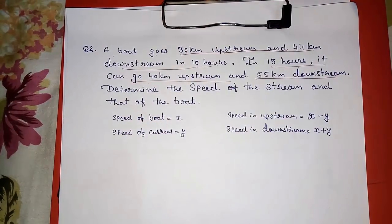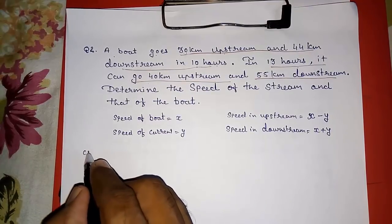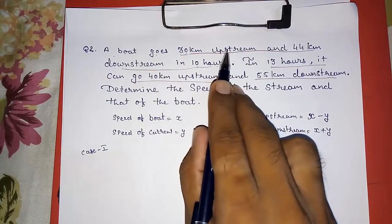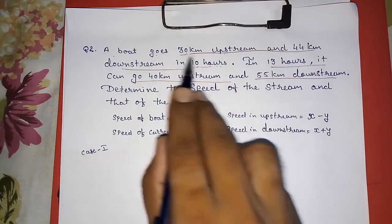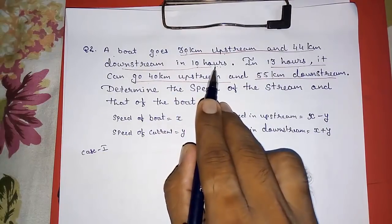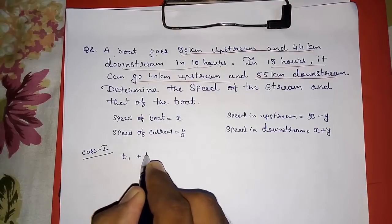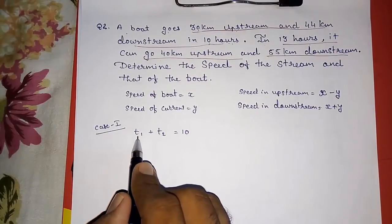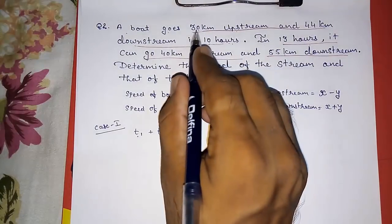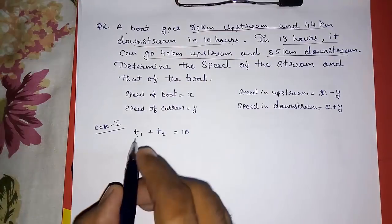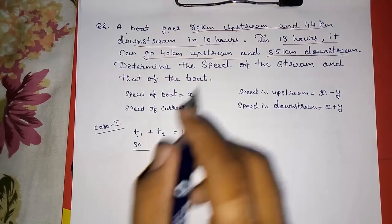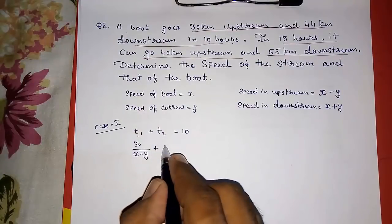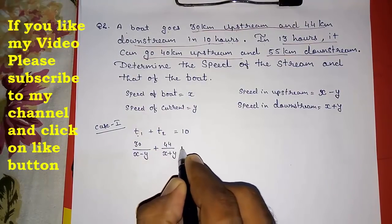For Case 1, the total time is T1 plus T2 = 10, where time = distance / speed. So upstream time is 30 / (X - Y) and downstream time is 44 / (X + Y). Our first equation is: 30/(X - Y) + 44/(X + Y) = 10.